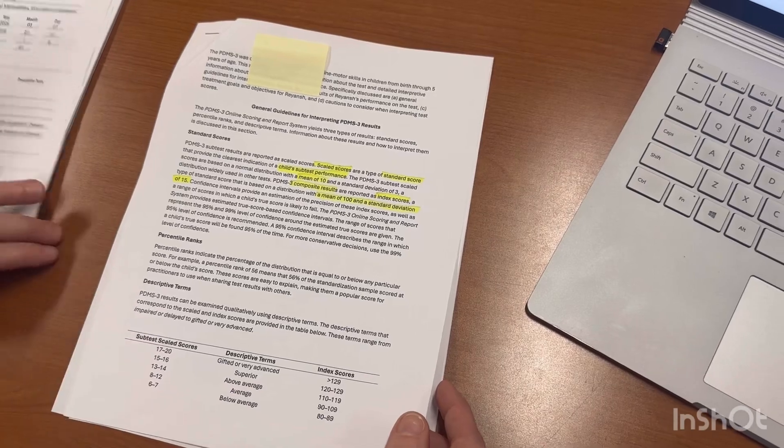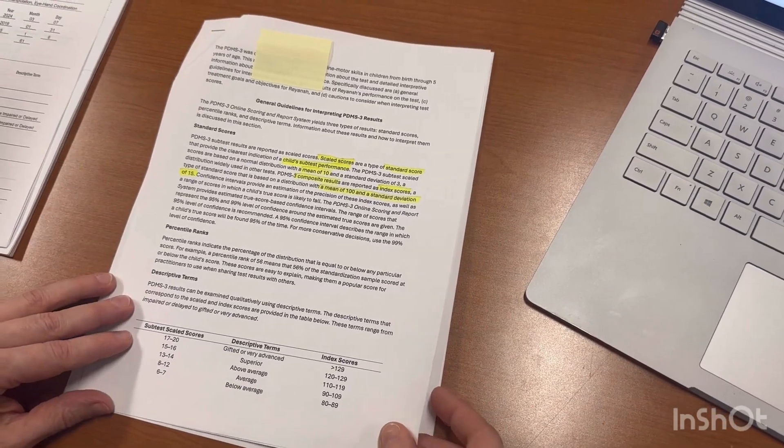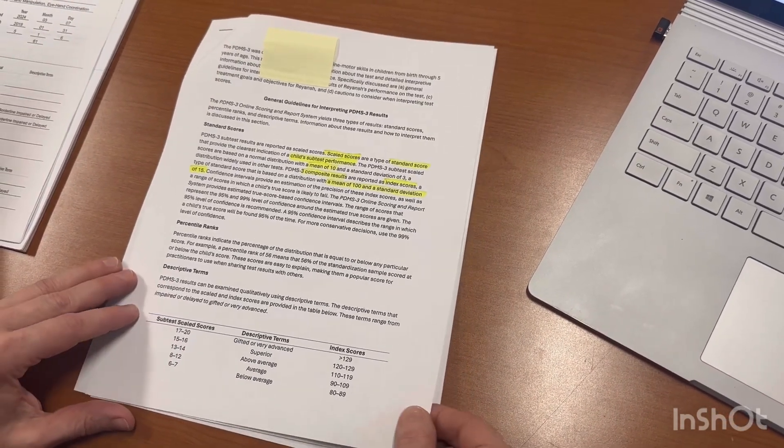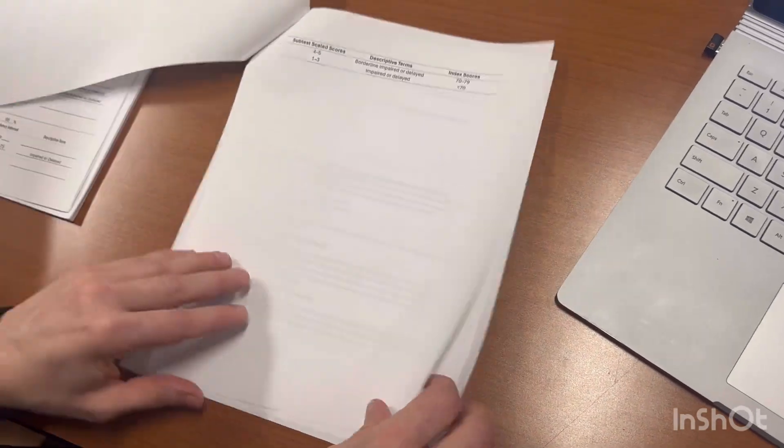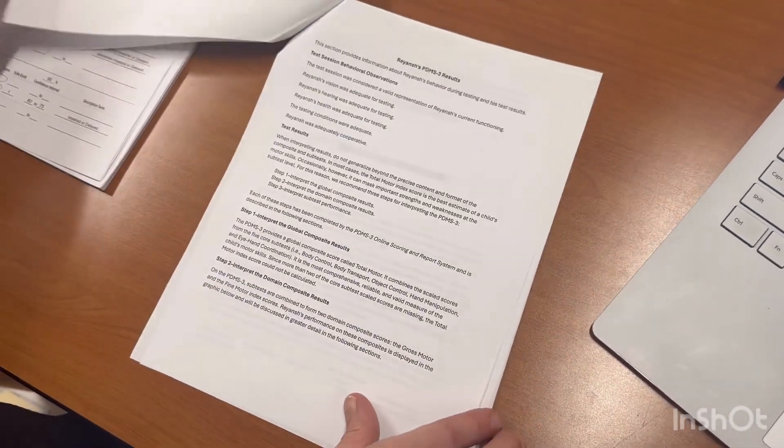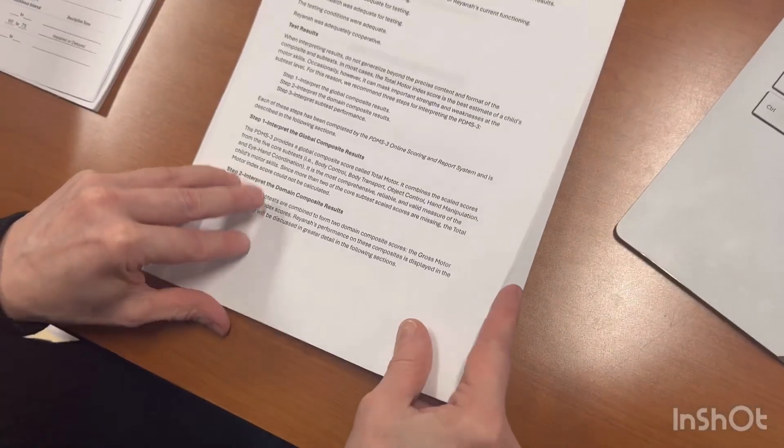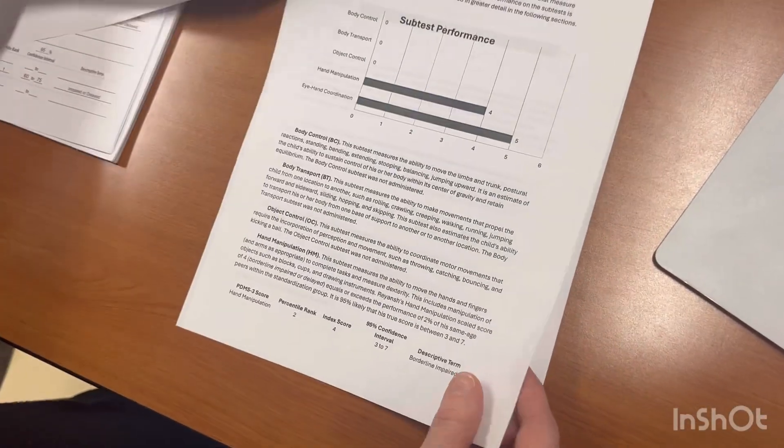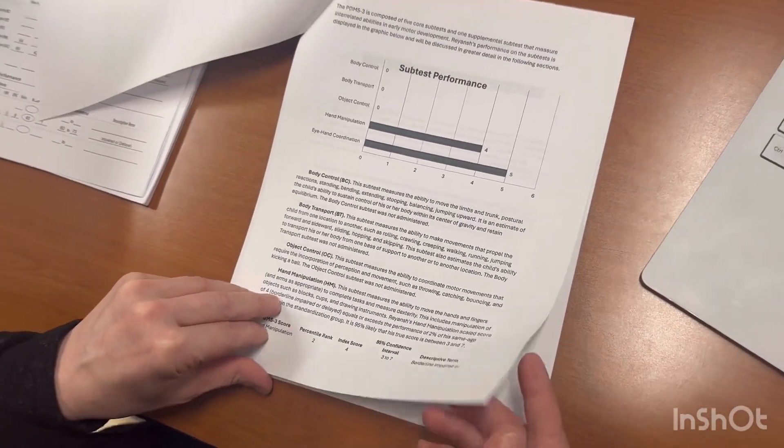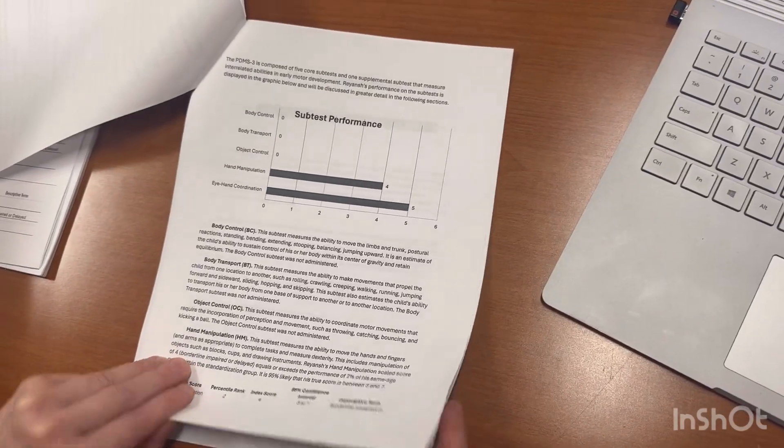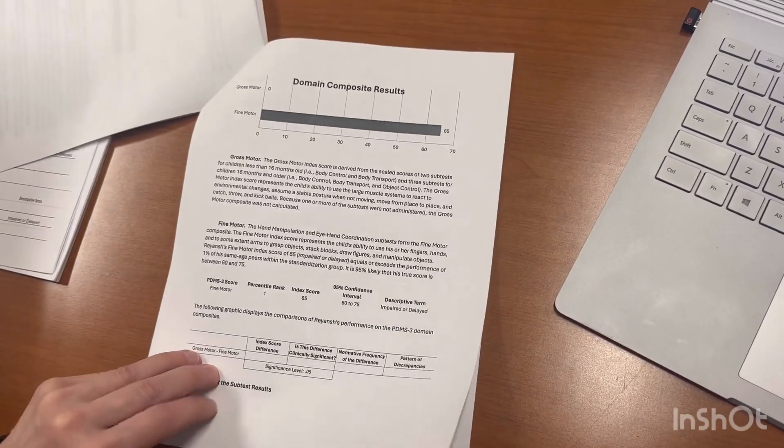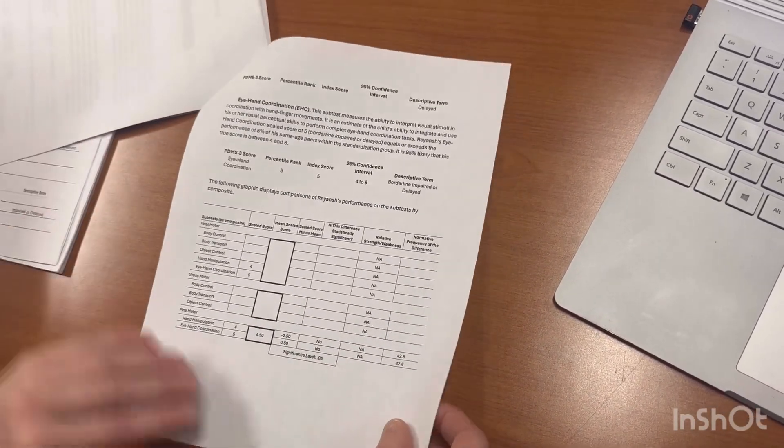So when you go online, you can get a narrative that is available from the website, but it's really extensive in terms of length, and it includes the gross motor sections in it as well. So to put into my evaluation report, I thought it would be too much, so I created my own.